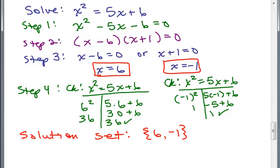Here's an example showing all those steps. To solve X squared equals 5X plus 6, the first step is to set the equation equal to zero by subtracting 5X minus 6 from both sides. Then factor the left-hand side, set each factor equal to zero and solve. Plugging in 6 and negative 1 into the original equation confirms both solutions check out. The solution set is 6 and negative 1.